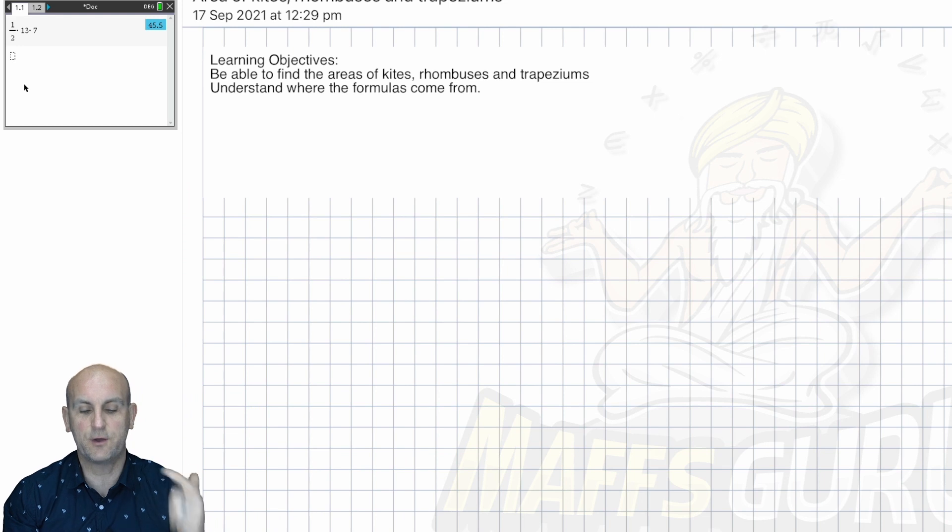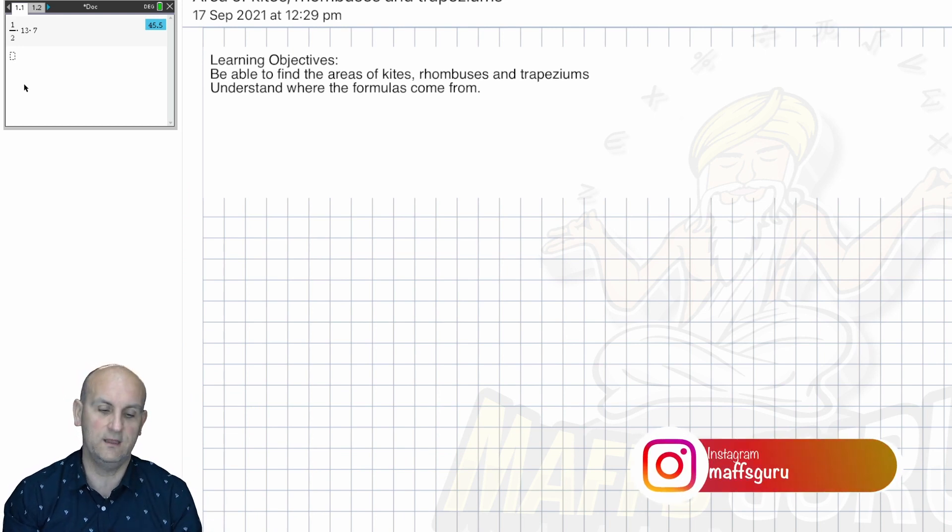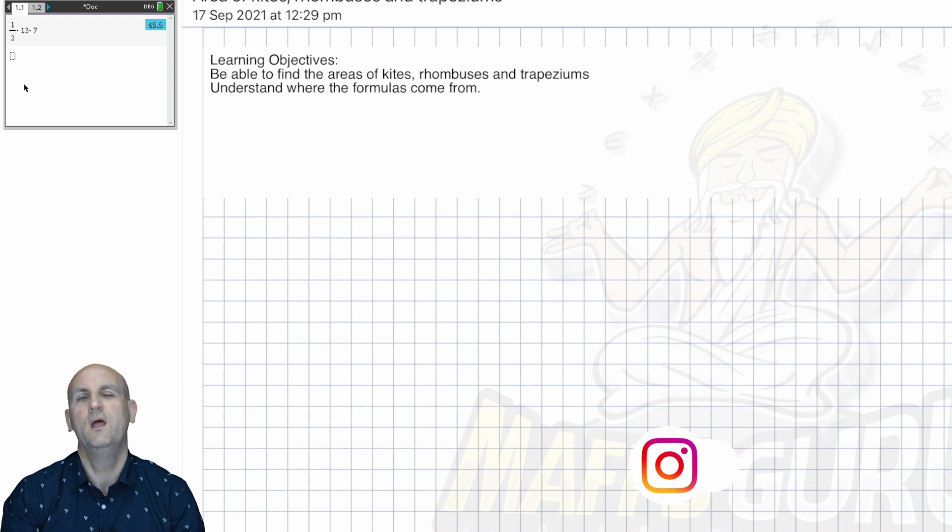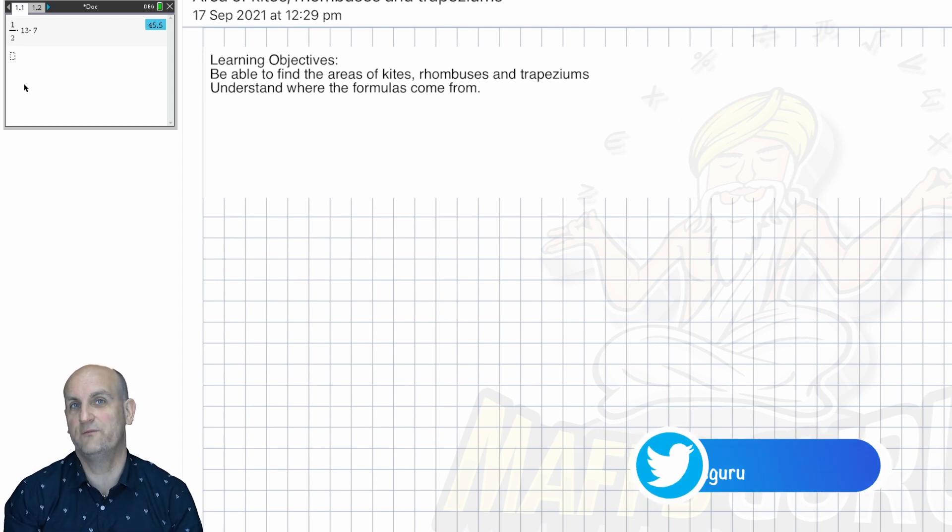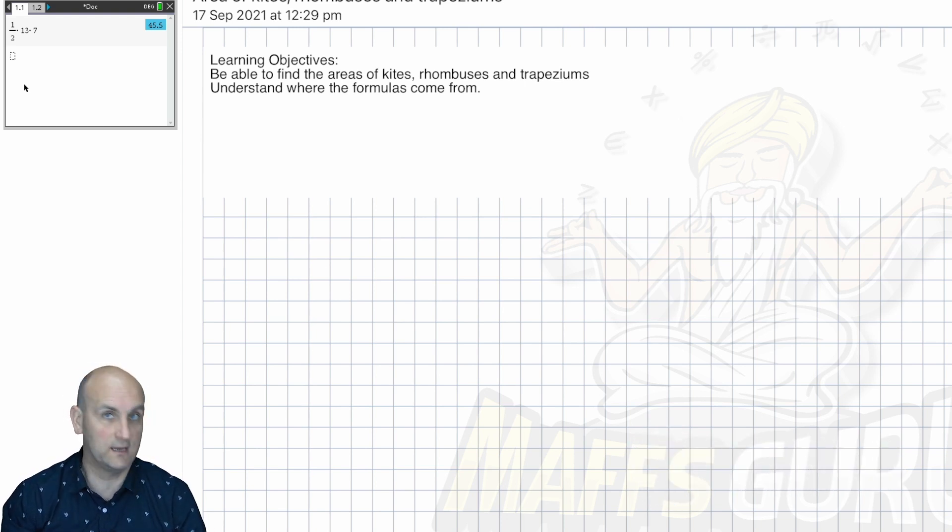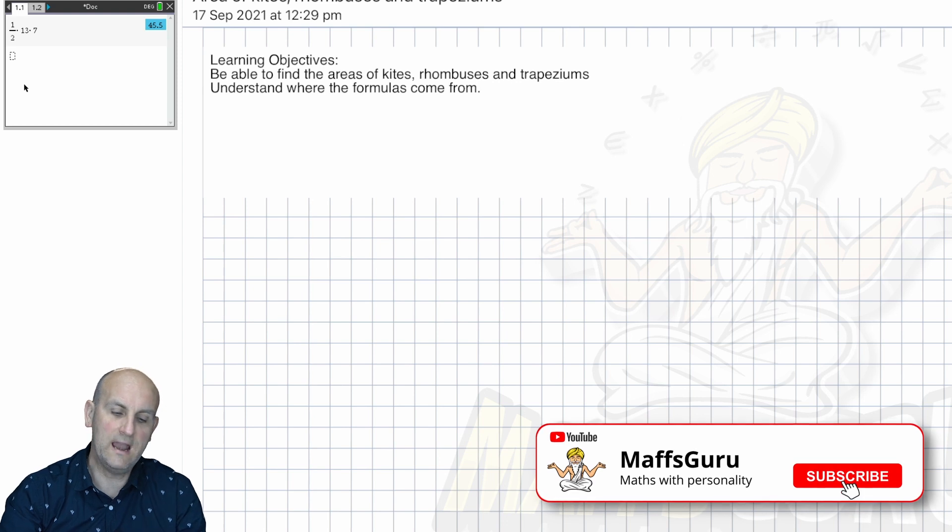The areas of kites, rhombuses and trapeziums. And understand where the formulas come from. Sort of. Probably not. To be honest with you, do I need to teach you where the formulas come from? Probably not. We just need to know how to use them because they're going to come up in Maths all over the place.